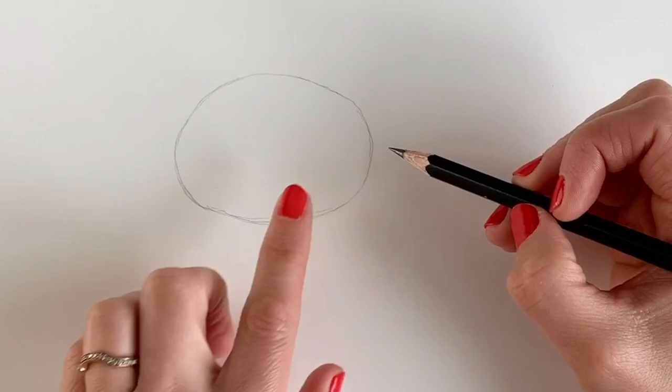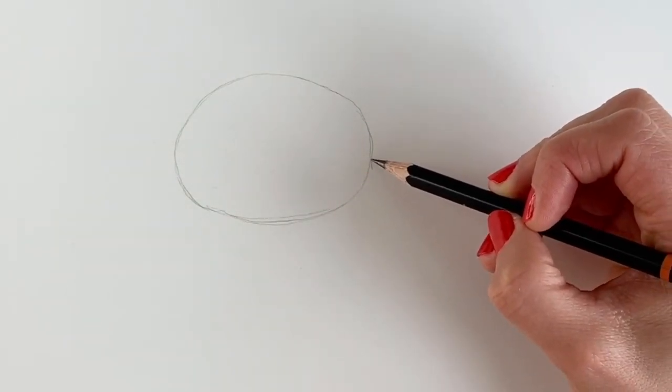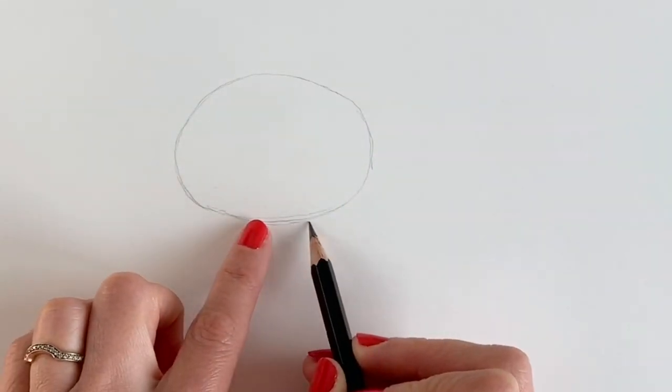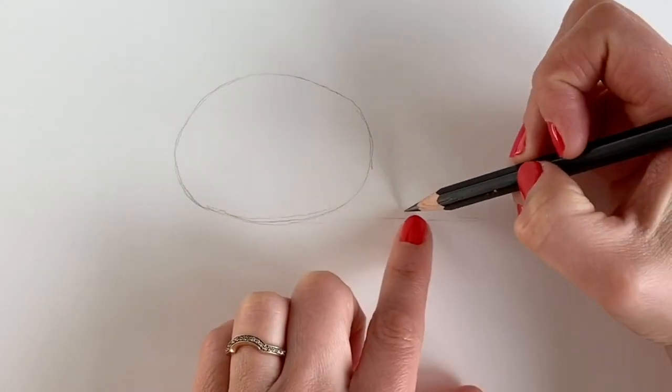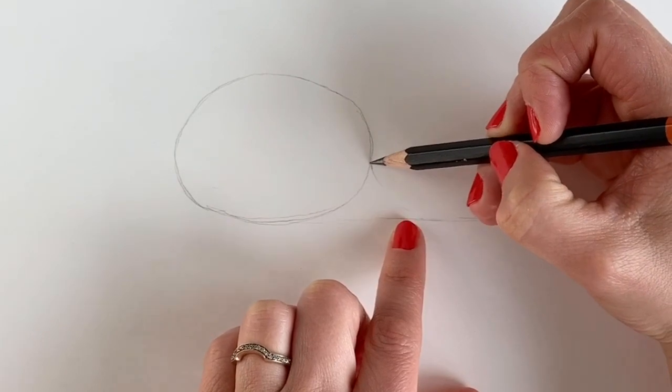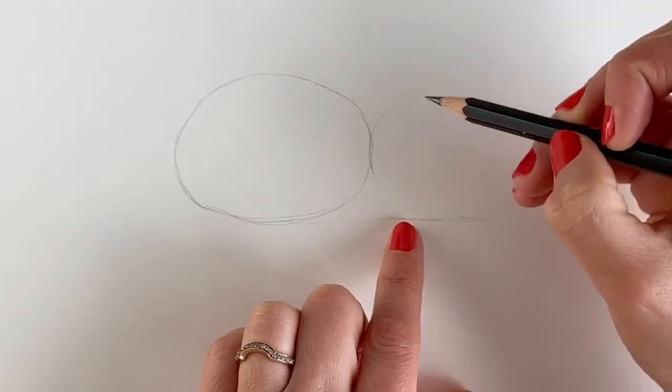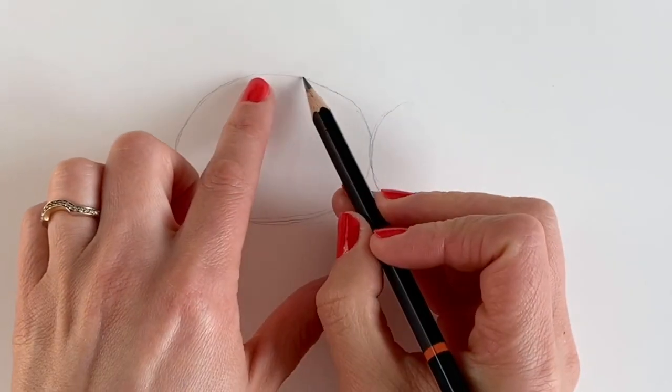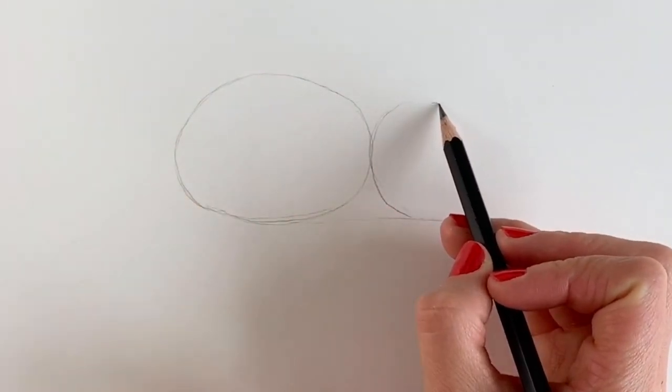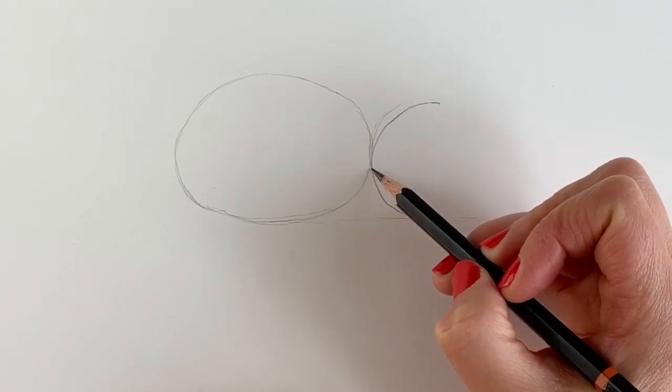Next to this oval shape, we're going to be drawing a circle. Do it in line with this oval shape, the same kind of height. This is going to be the piglet's head. The circle is not going to be quite as tall as the oval shape, so the top of the circle is going to stop about there. So let's just draw a circle.